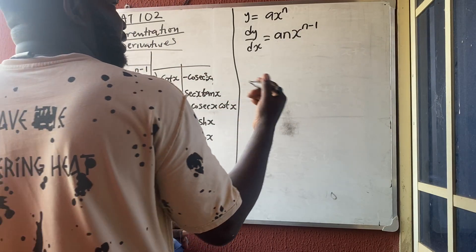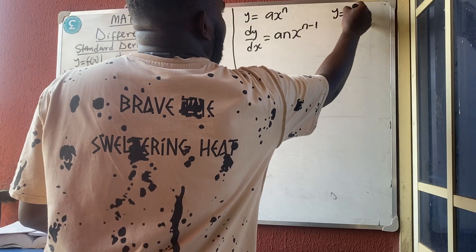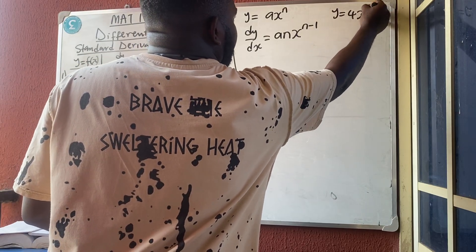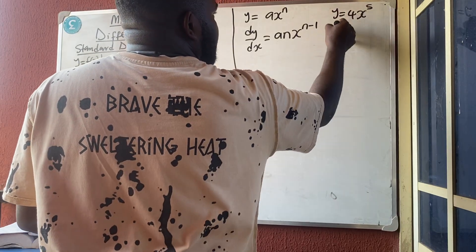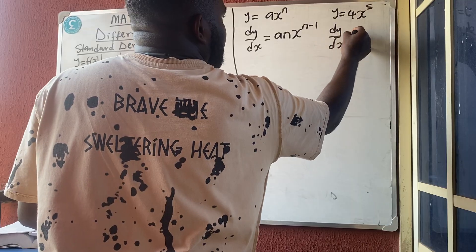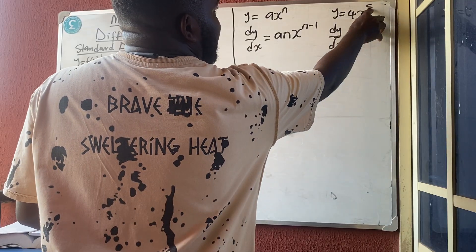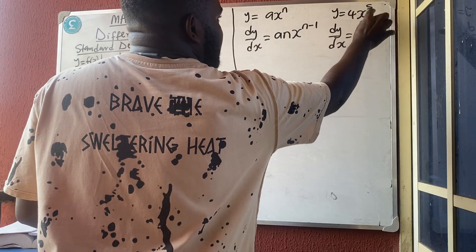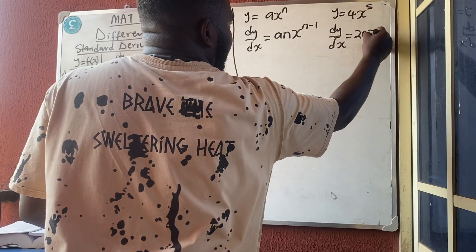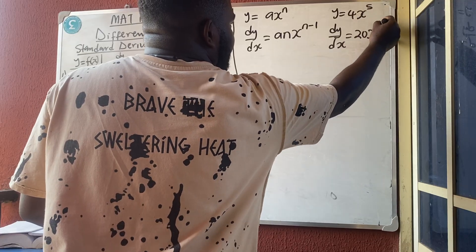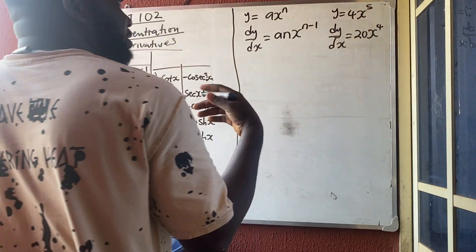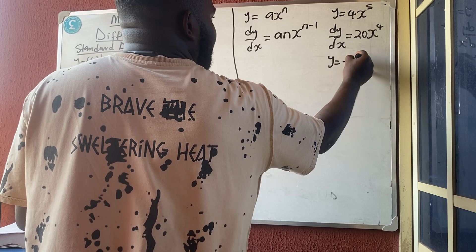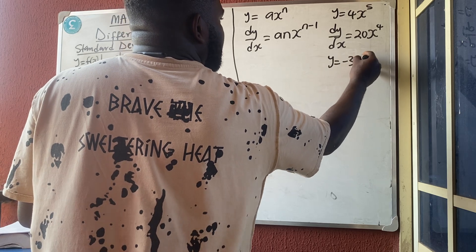For example, if y = 4x^5, then dy/dx: multiply by the power — 5 times 4 = 20 — then remove one from the power, giving 20x^4. Similarly, if y = −3x^(−5)...